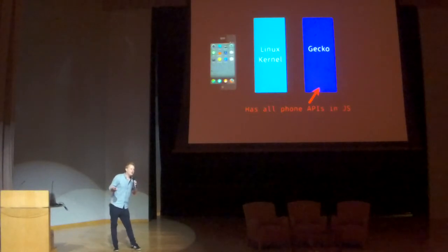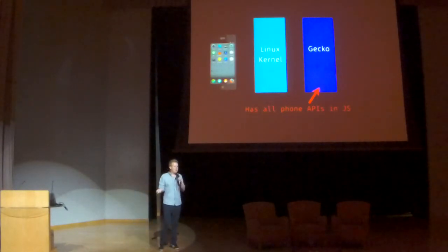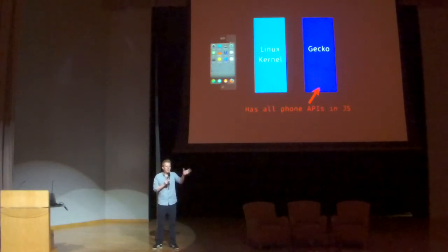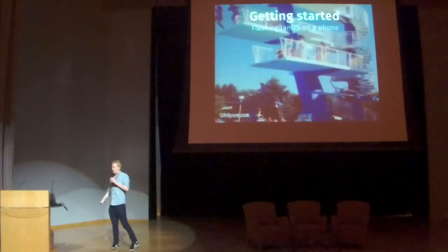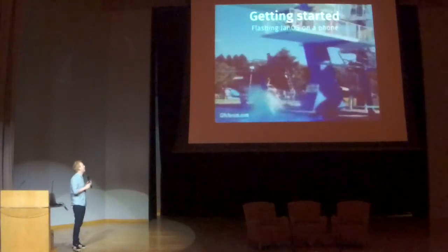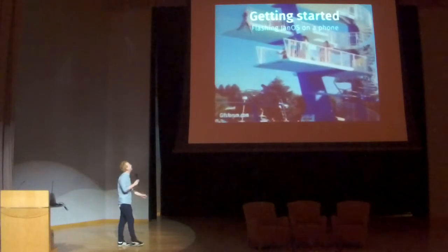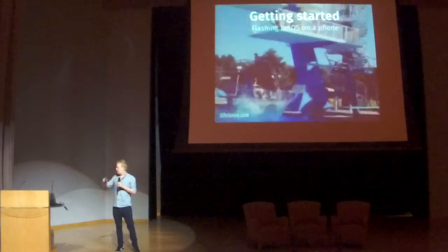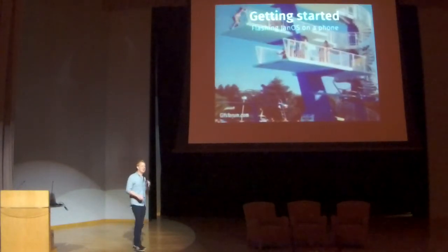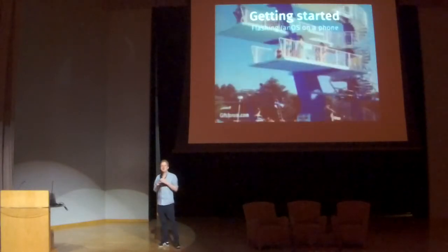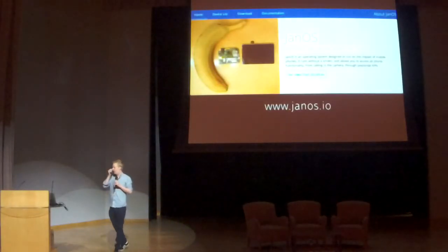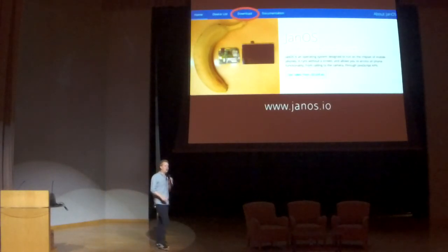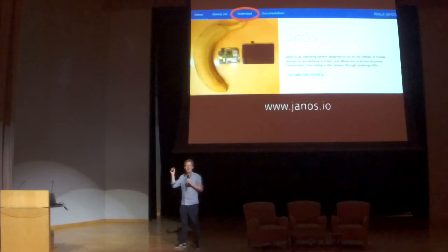So now you know what Yon OS is — it's Firefox OS without the UI. But how are you going to make this into an IoT thing, because it's a mobile phone? Getting started: flashing Yon OS on the phone. If you follow these simple steps, this will not happen to you. At the moment, for four mobile phones and the Raspberry Pi, we have builds available at yonos.io on the download page. There are also instructions on how to flash it on phones like the Nexus 4, Nexus 5, and Galaxy S2.